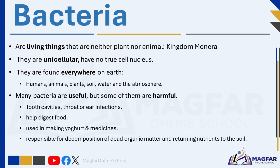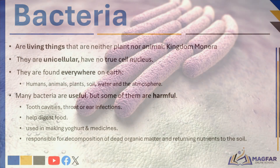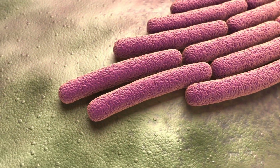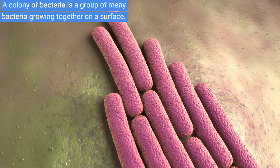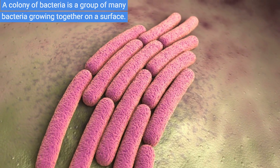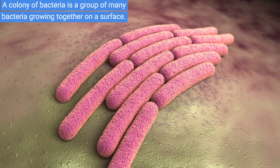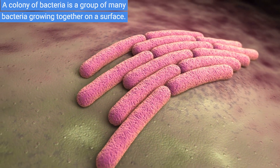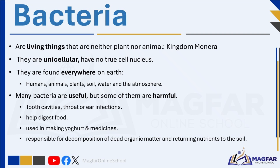Bacteria are living things that are neither plant nor animal. They are unicellular and belong to a group all by themselves. Bacteria are single-celled organisms and have no true cell nucleus. All bacteria are unicellular, although some live together in colonies that are multicellular. This group or kingdom is called the Monera. Bacteria are some of the smallest organisms in the world, can only be seen under a microscope, and are found everywhere on earth — in humans, animals, plants, soil, water, and the atmosphere.